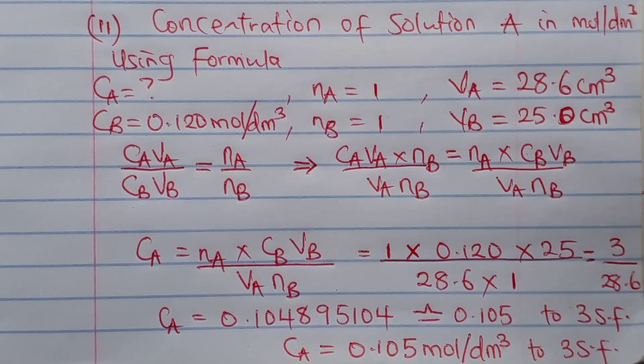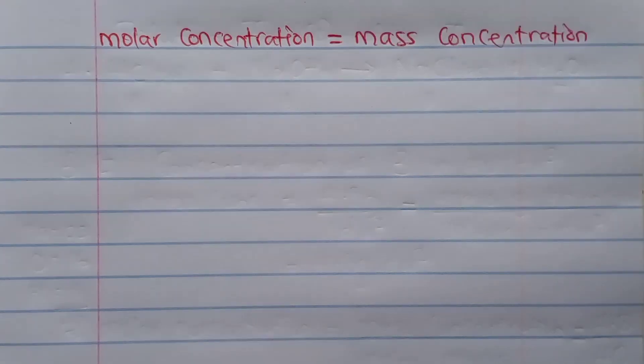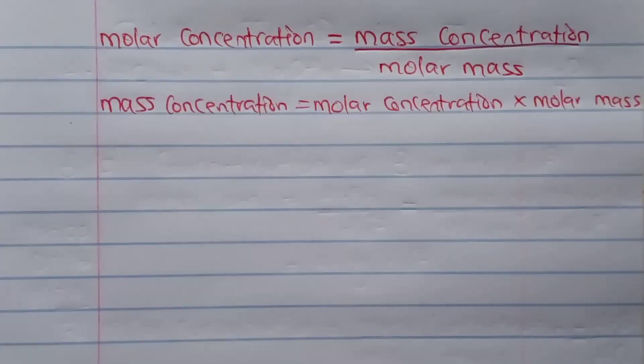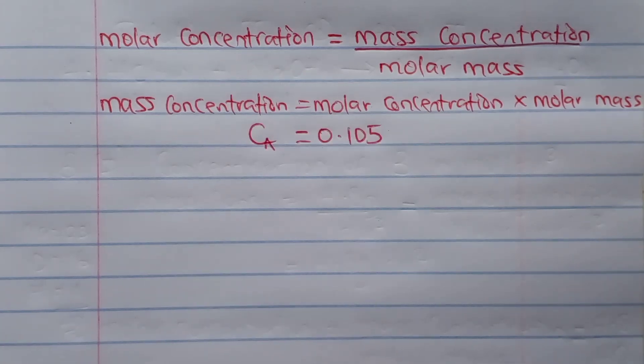You should always insert the unit — it is very, very important in this work. Since we have gotten CA, the concentration in mole per dm³ of solution A, we also need to get the concentration in grams per dm³. Using the relationship: molar concentration = mass concentration / molar mass, inserting the values, the molar concentration is 0.105 and the molar mass of HCl is obtained by adding hydrogen (1) and chlorine (35.5), which gives 36.5.